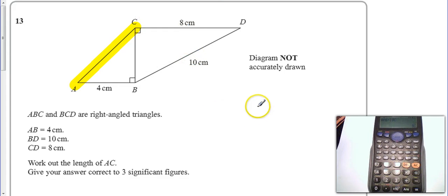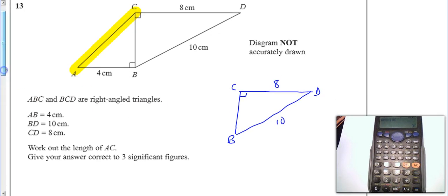So let's start with this triangle over here. Let's start with this triangle which goes C, B, D and that's 8 and that's 10.